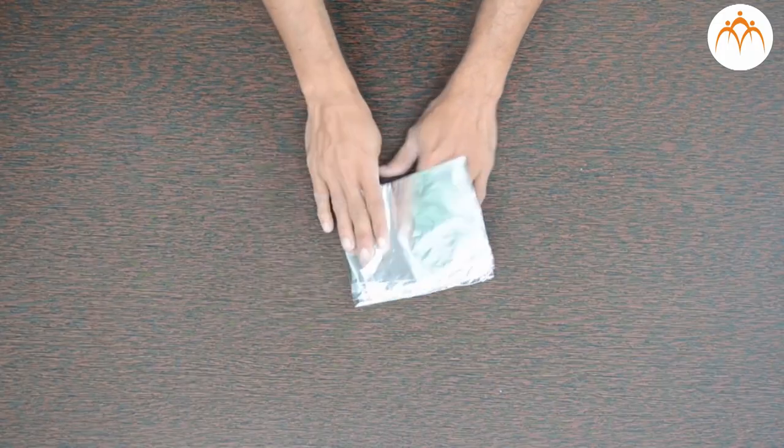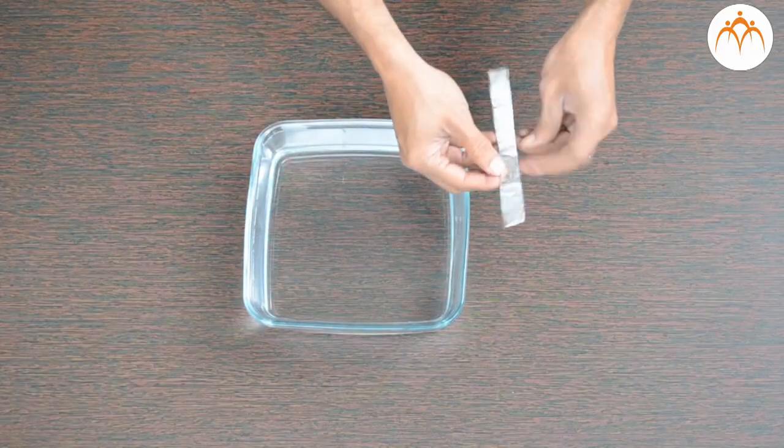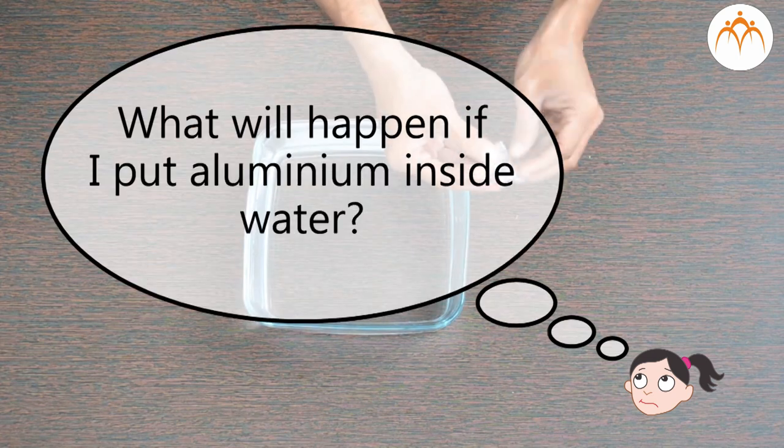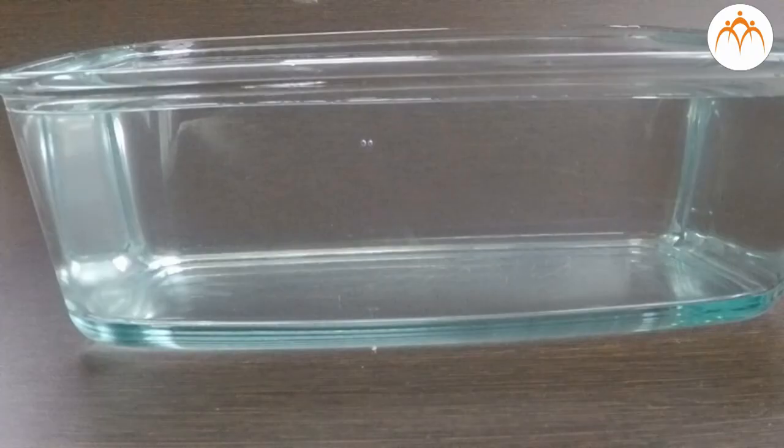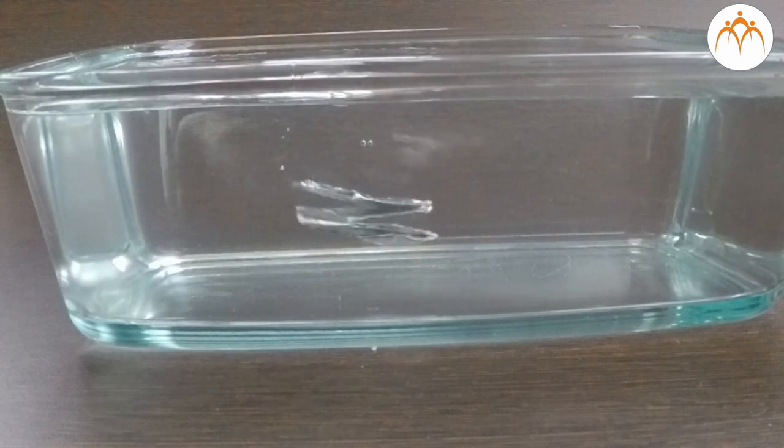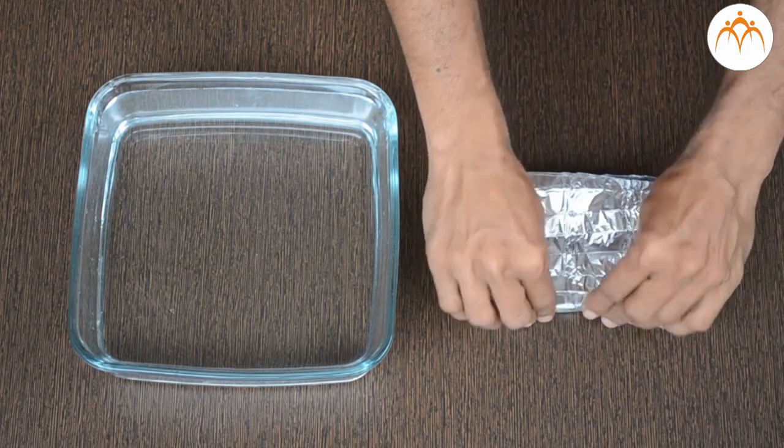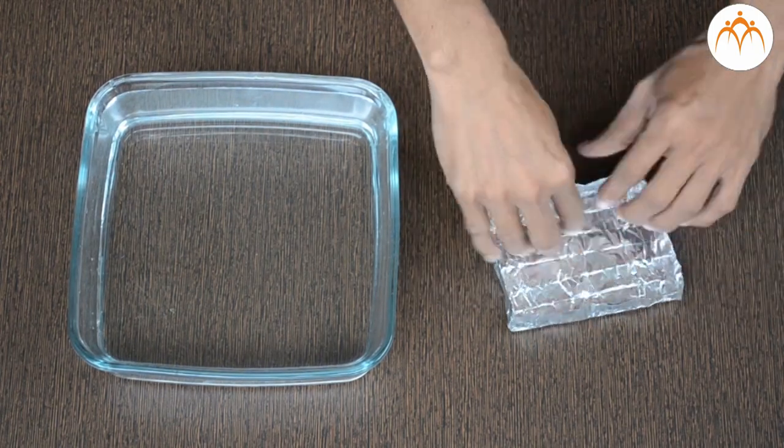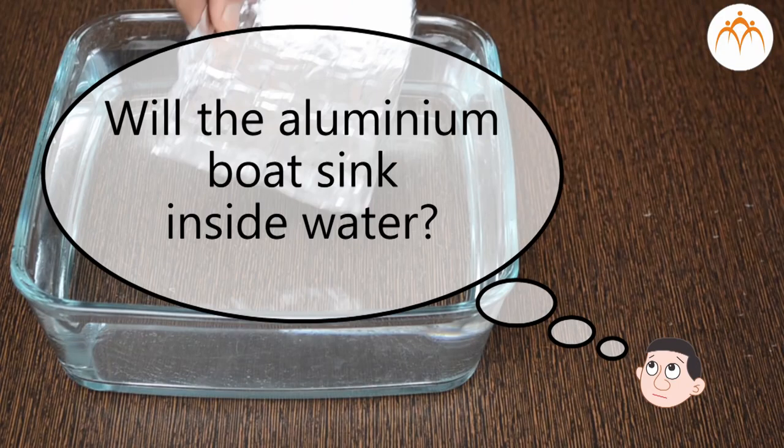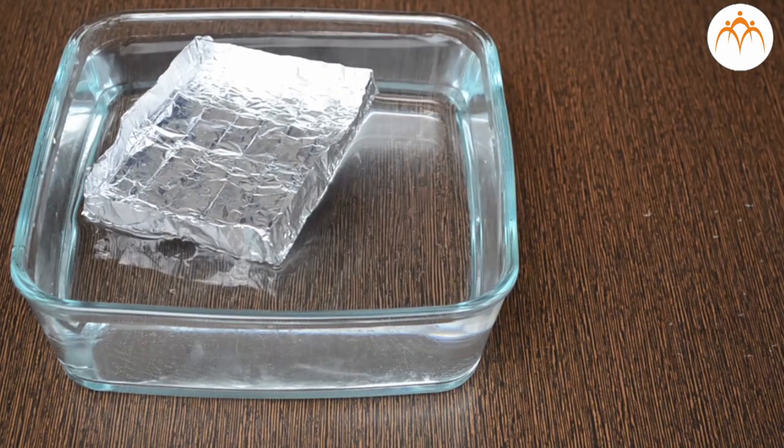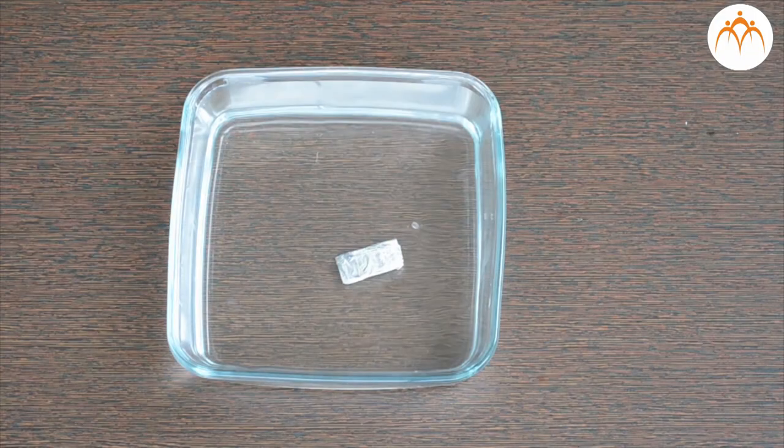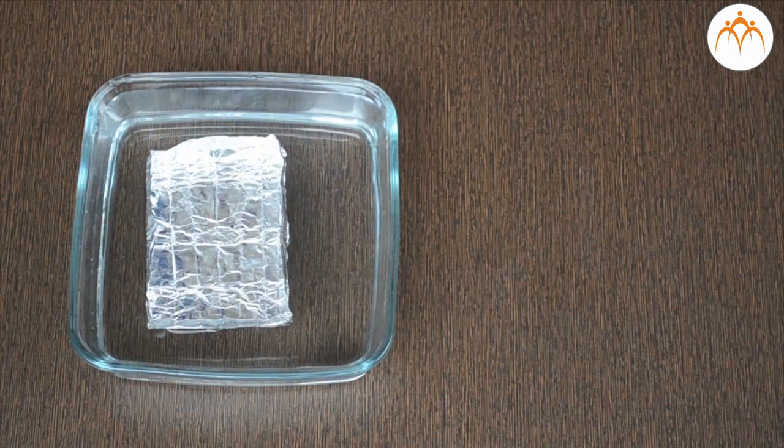If I take this aluminum foil and place it inside water, what will happen? It goes down. But if I take the same sheet and make a boat from it, will it sink? Though the weight of the sheet and the boat formed from it has not changed, the shape has changed.